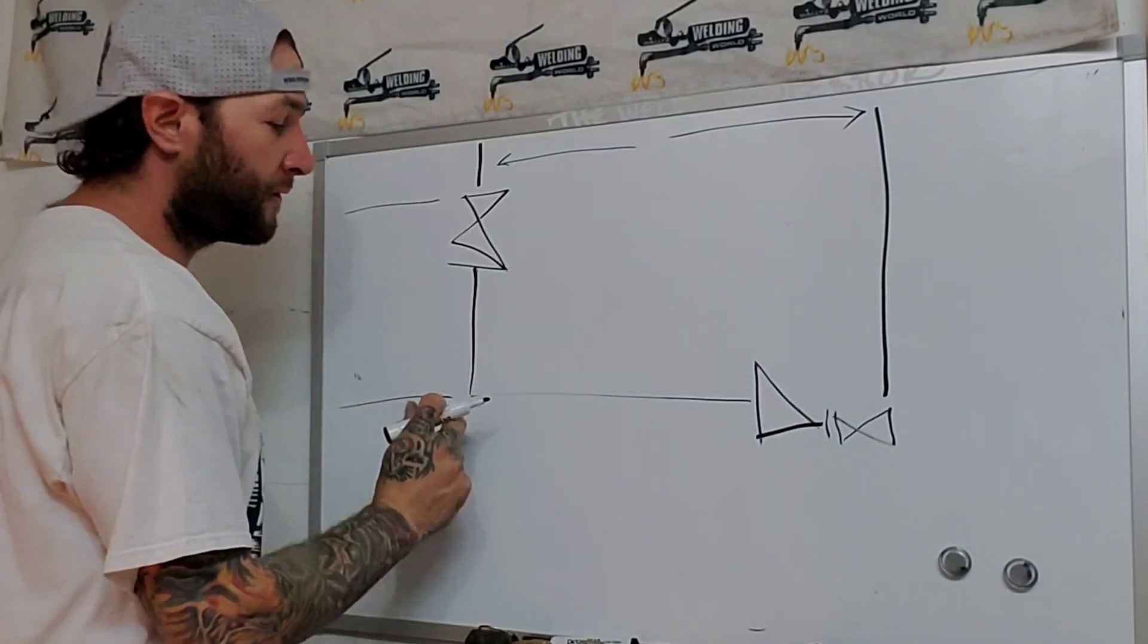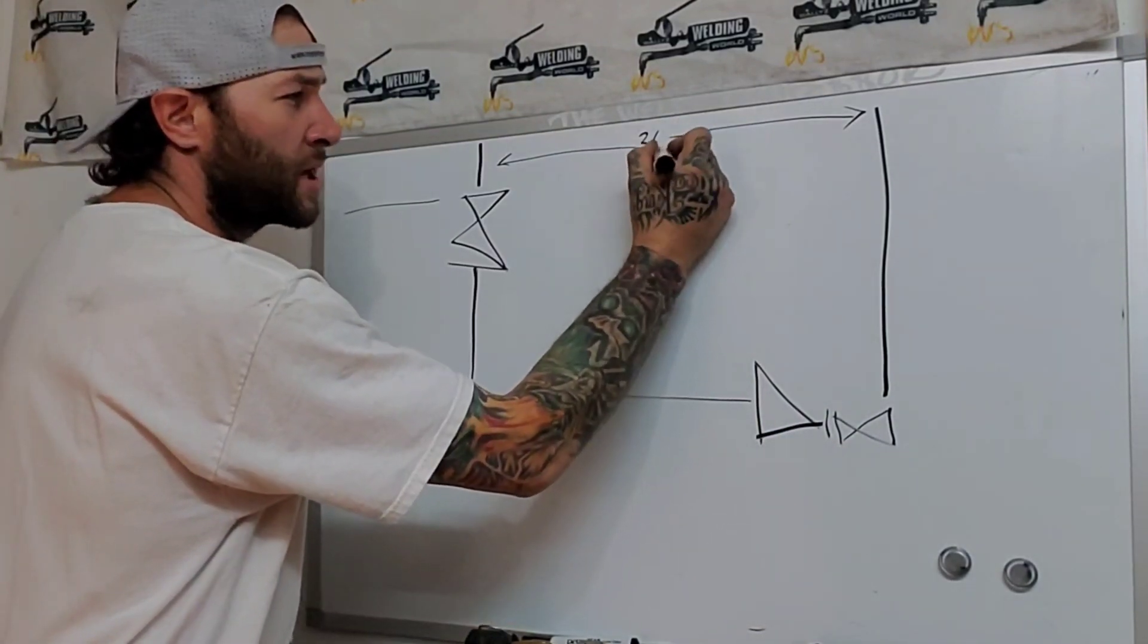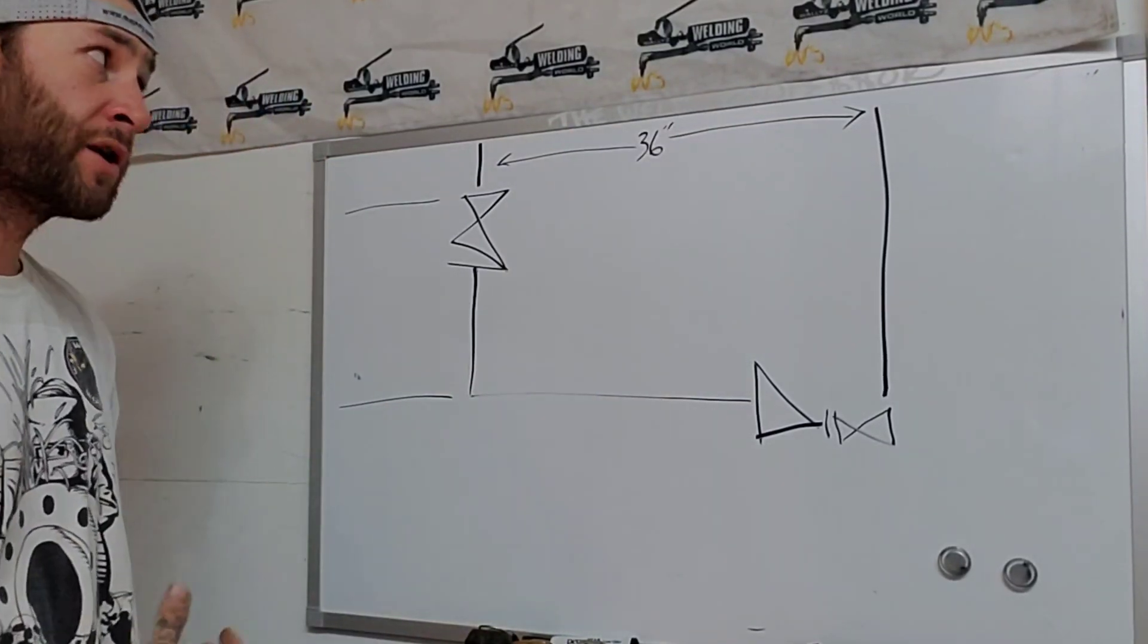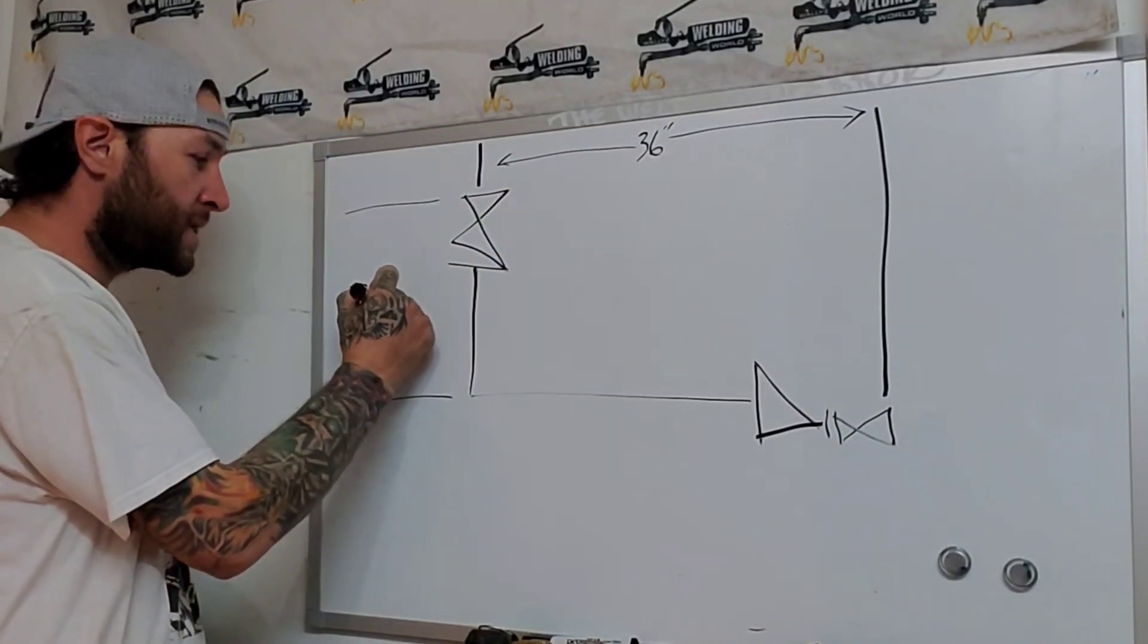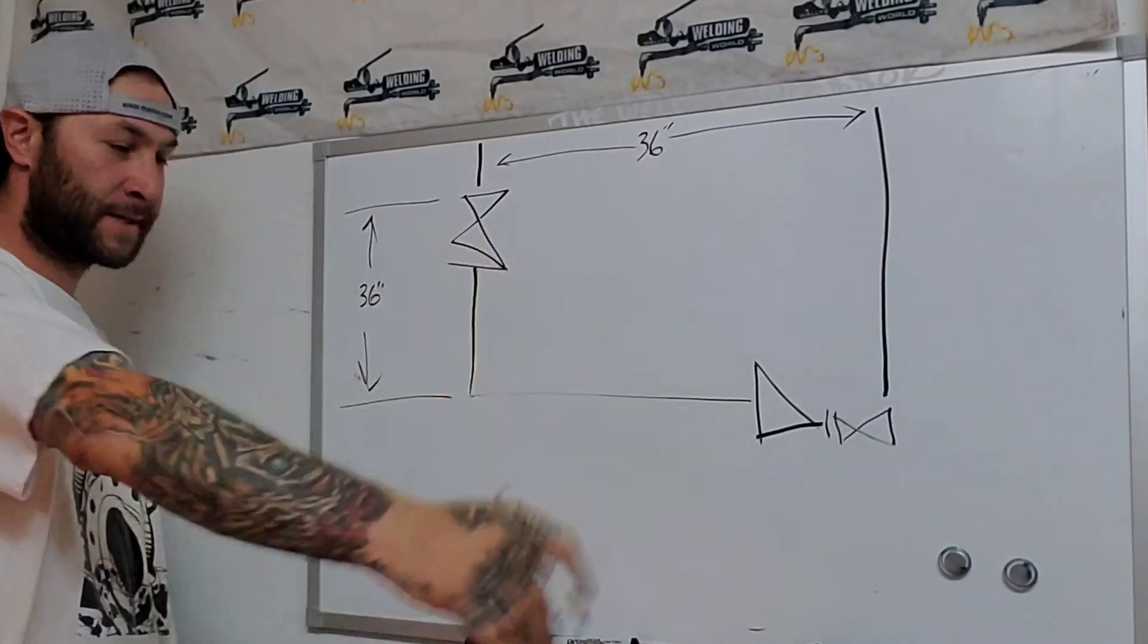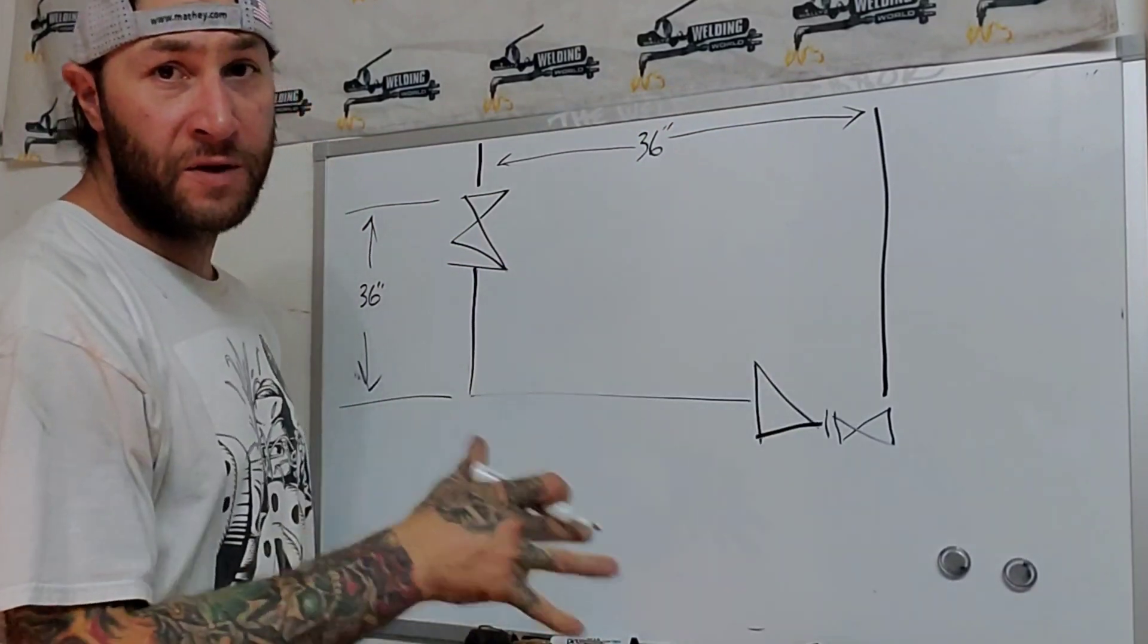Let's say it's a 3-foot run from the center of this line to the face of this valve. 36 inches. We'll break it down to inches. For some people, it's a lot easier to understand inches. Say it's also 3 feet right here. Let's just do easy math right here.